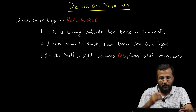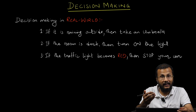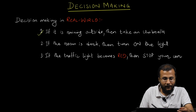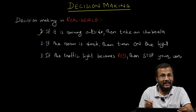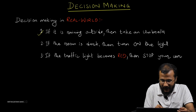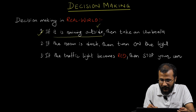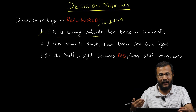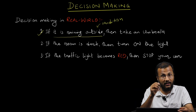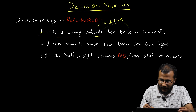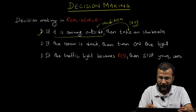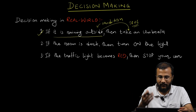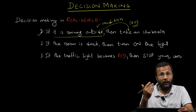These are some decision-making statements from the real world that we undertake in our day-to-day life. The first one: if it's raining outside, then we take an umbrella with us. Here, 'if it's raining outside' is the condition — it can be true or false. Only if this condition is true do we take an umbrella.